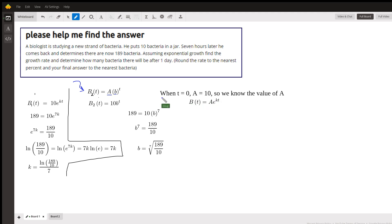Number of bacteria, so when t is 0, a equals 10. So we know the value of a. So we can go to here. And now we know a second set of conditions. After seven hours, there's 189 bacteria. So we can put 189 here and seven here and solve this for b.